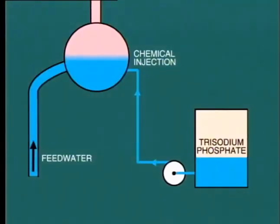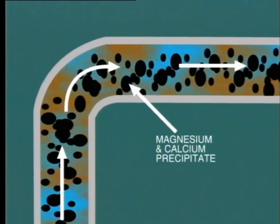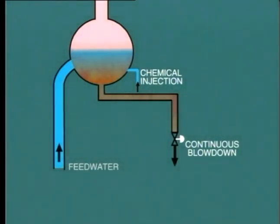We'll be talking more about corrosion later in this module. Even with all of these precautions and controls, there is still a tendency for the concentration of solids to build up in the boiler water. For this reason, an attempt is made to prevent scale formation by injecting a chemical dispersant such as phosphate into the boiler water. This is usually added at the boiler drum, so a high pressure pump is required. Phosphate has the effect of keeping the magnesium and calcium precipitate in suspension by dispersing the solid particles throughout the water, so that instead of forming a hard scale, the solids remain as a slurry to be discharged from the boiler through the continuous blowdown line.